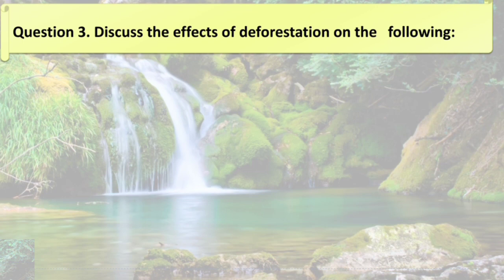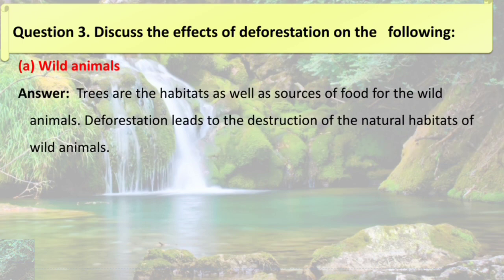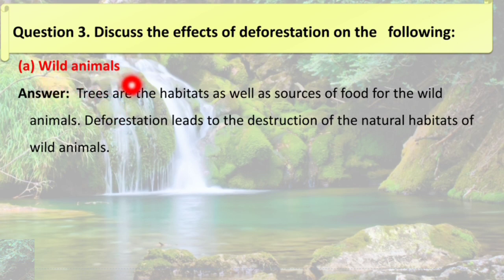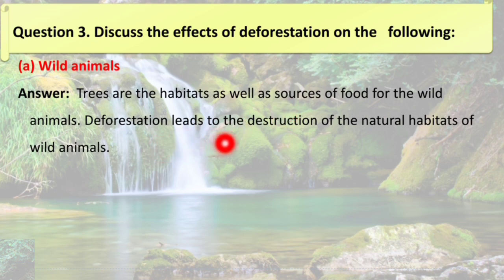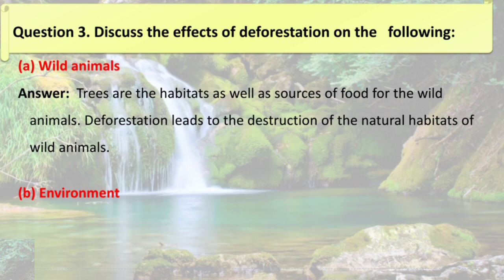Question number 3: discuss the effect of deforestation on wild animals. Trees are the habitats as well as sources of food for wild animals. Deforestation leads to the destruction of the natural habitat of wild animals. Wild animals live in forests, so trees are their habitat and also a source of food. If we cut too many trees, the natural habitat of wildlife will be completely destroyed and they cannot survive.